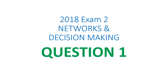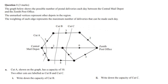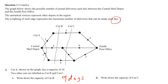2018 exam 2, networks and decision making, question 1. We've got cuts — it looks like it's going to be maximum flow, minimum cut. First one is: write down the capacity of cut B, which is this cut here. We can see we've got a 3, a 2, and a 4, so if we add all those up you get 9 days.